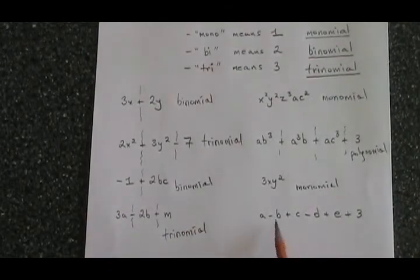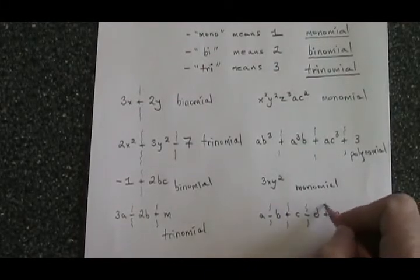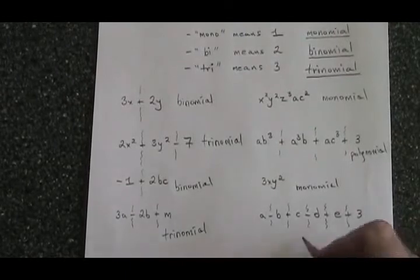And finally, here is a giant polynomial. I can make five walls at all of these minus and plus signs. It has six terms. It is a polynomial.